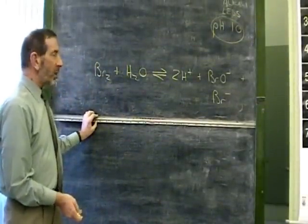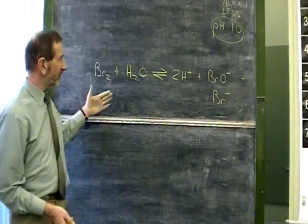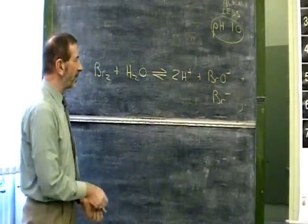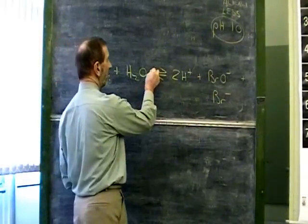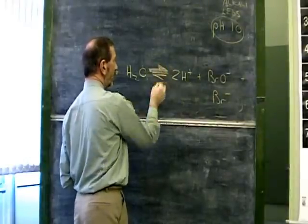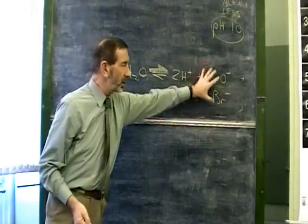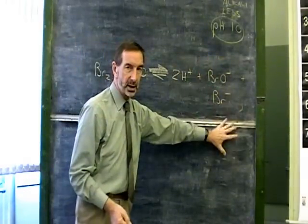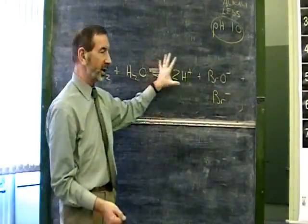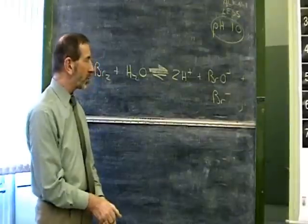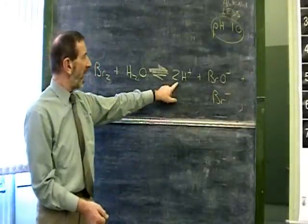Now, what can we do to make it shift to the right? Let's say, for example, we wanted to encourage the forward reaction. How can we get it to do that? One possibility would be to remove something on the right. If we remove something from the right, the system will shift to the right to replace it.